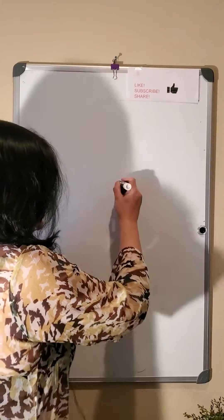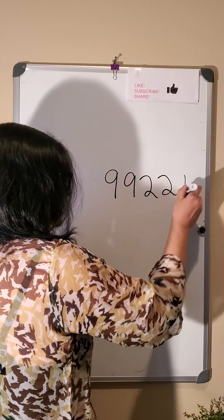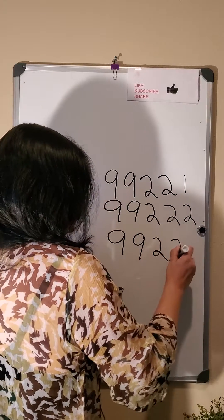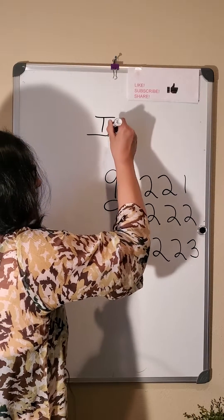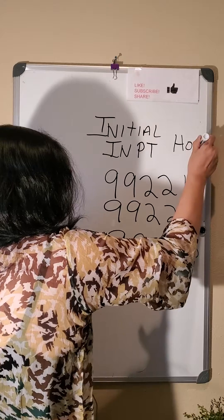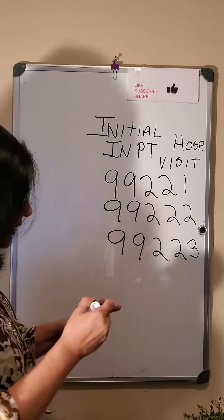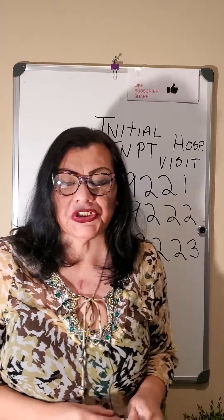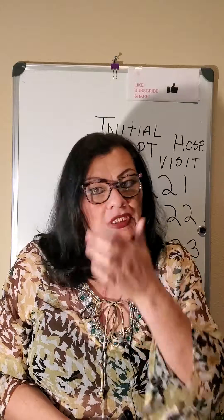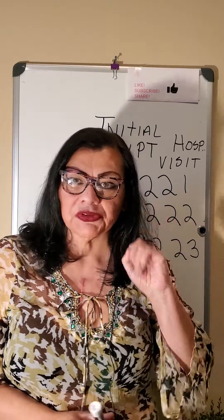For that we have three codes for the initial inpatient visit and three codes for the subsequent. 99221, 99222, and 99223 are for the initial inpatient hospital visit. In other words, the doctor is going to go see his or her patient in the hospital, and the patient has already been admitted.